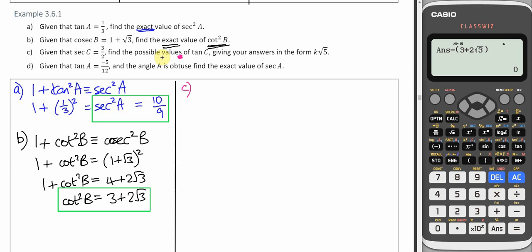So sec and tan, the identity that links together sec and tan is 1 plus tan squared is sec squared. Let's put in what we know.